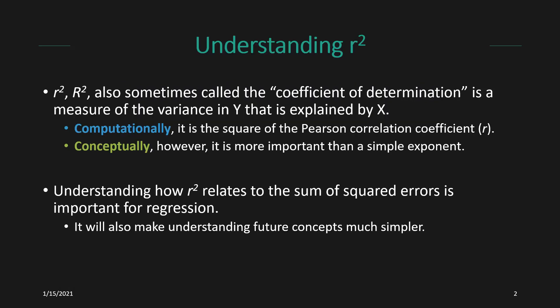For understanding r-squared — which is also sometimes written as a capital R-squared and is also sometimes referred to as the coefficient of determination — all of these generally refer to the same statistic: it's a measure of the variance in y that is being explained by x. Computationally, in the case of a simple regression, r-squared is just the square of the Pearson correlation coefficient, r. Conceptually, however, it's much more than just that simple exponent, because r-squared represents the variance in y that is explained by x.